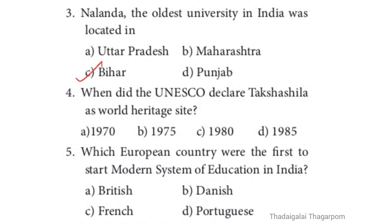Question 4: When did UNESCO declare Takshashila as a World Heritage Site? Options: 1970, 1975, 1980, 1985. The correct answer is C — 1980. When did UNESCO declare Takshashila as a World Heritage Site? The answer is 1980.